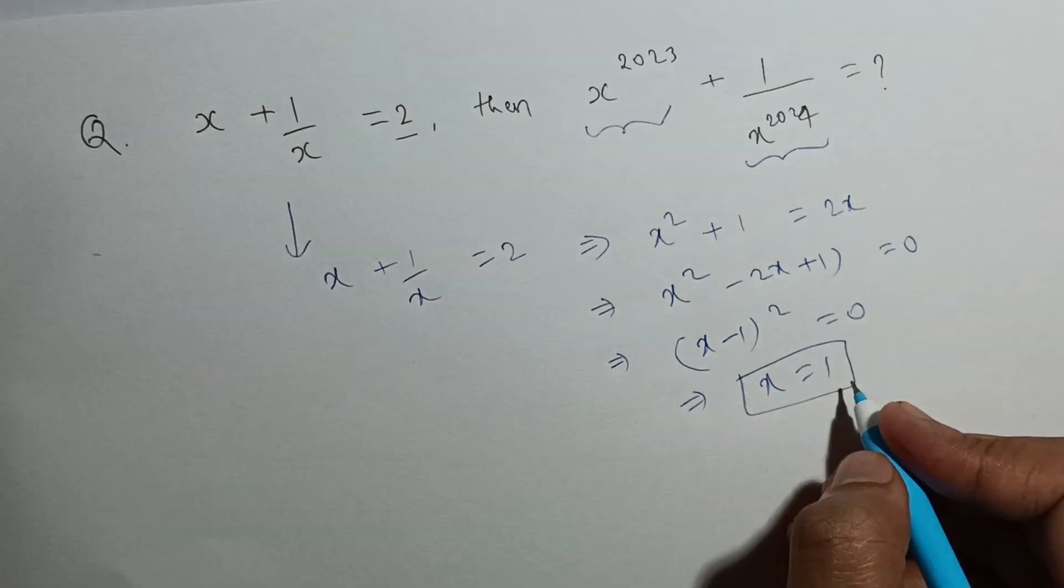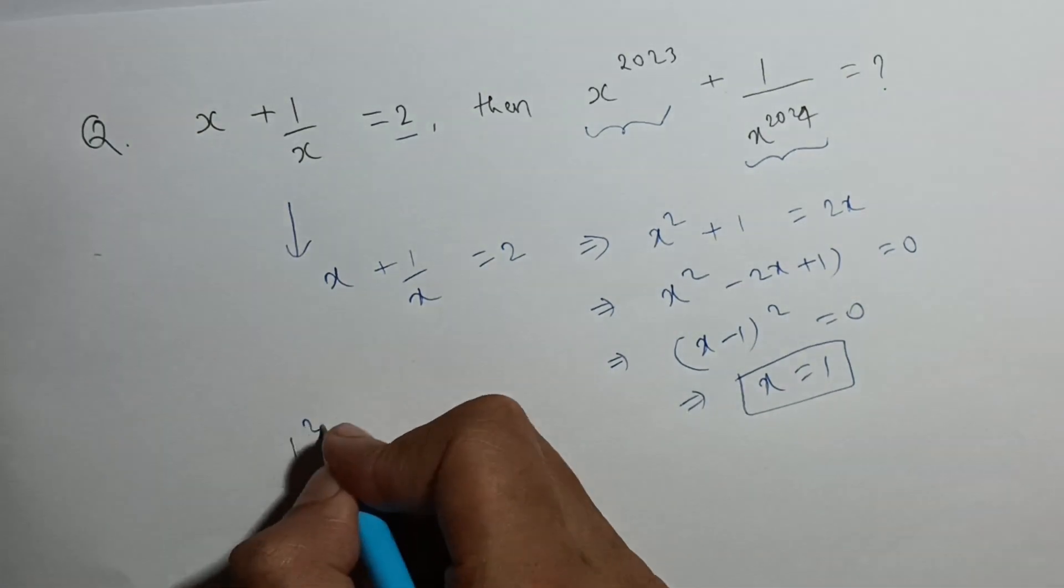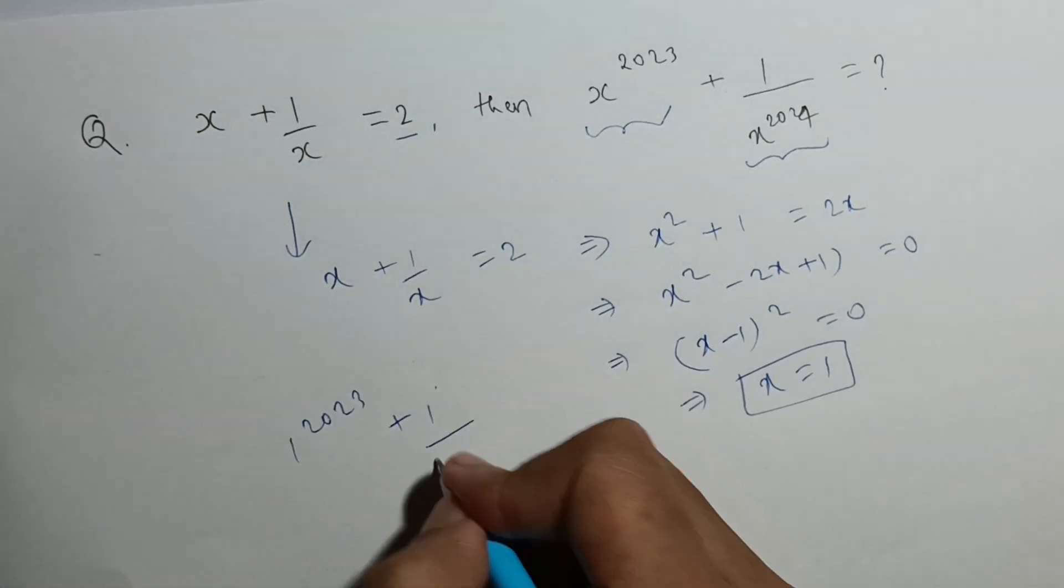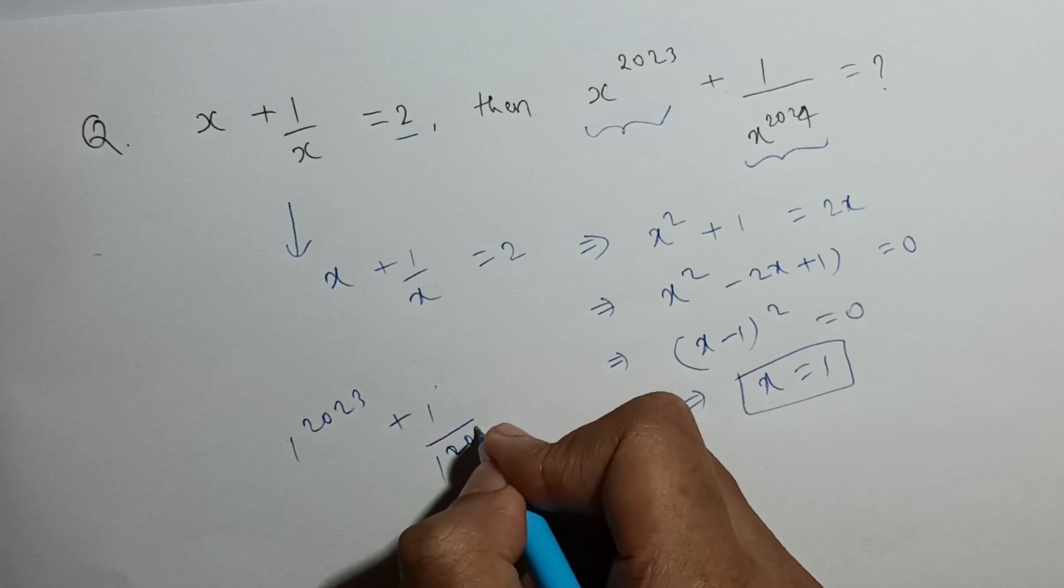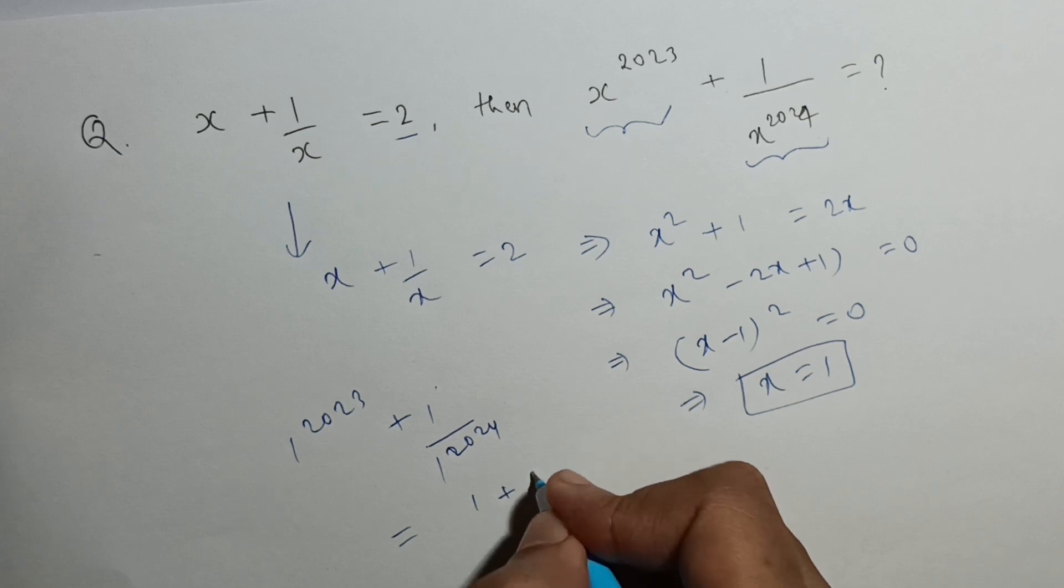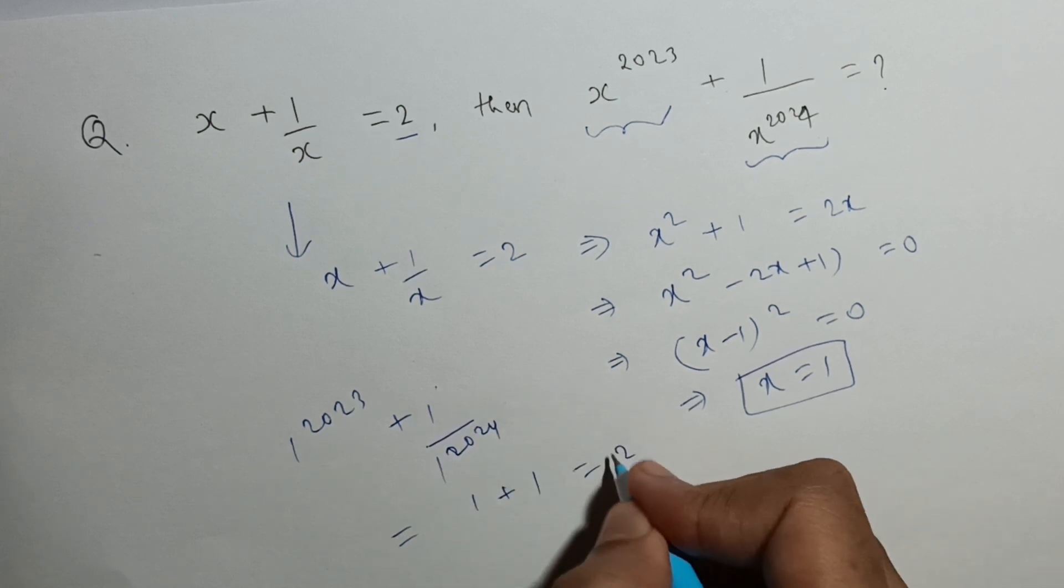Now since x equal to 1, I can simply put the value here. So 1 raised power 2023 plus 1 upon 1 raised power 2024. So any power of 1 I am going to get 1. This will be also 1. So 1 plus 1 equal to 2.